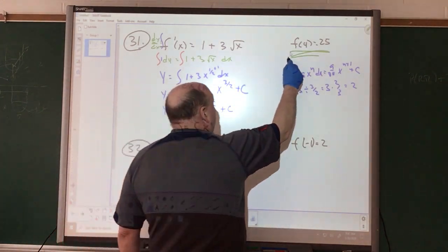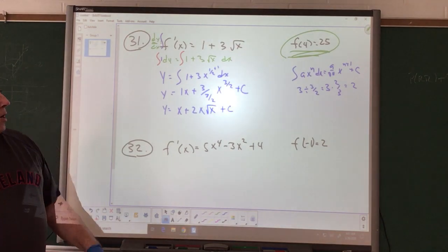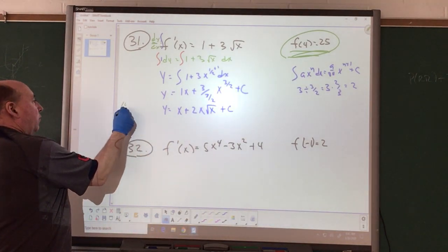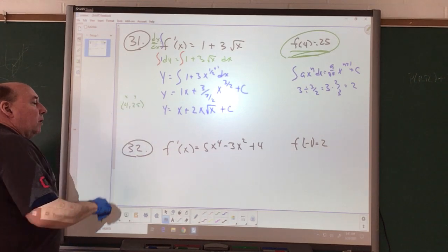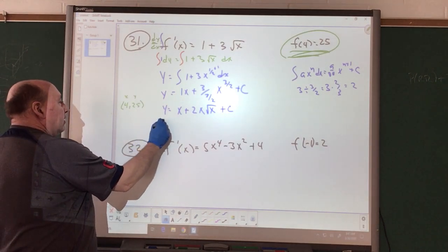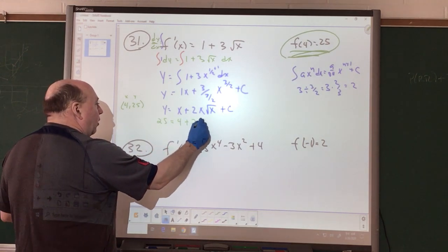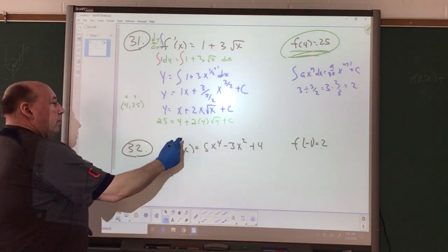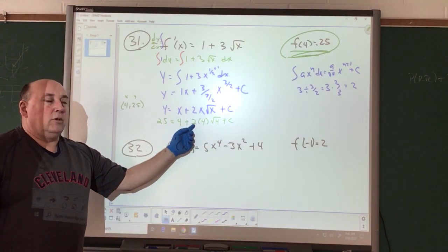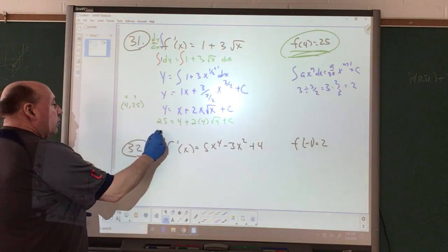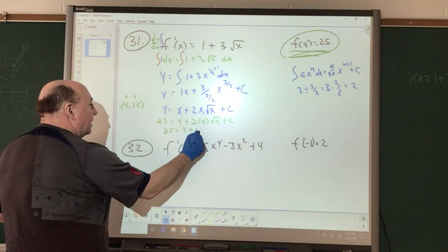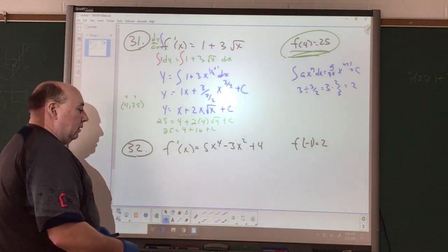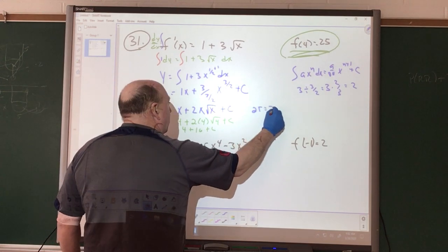Now our initial condition will allow us to solve for C. At f at 4, I get a value of 25. So I have an ordered pair 4, 25. Here's my X, here's my Y value. So my Y value is 25. This equals 4 plus 2 times 4 times square root of 4 plus C. Simplifying, square root of 4 is 2. 2 times 2 is 4 times 4 is 16. So we have 25 equals 4 plus 16 plus C.